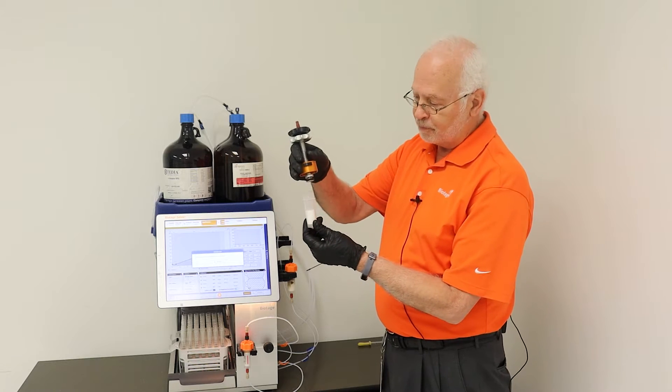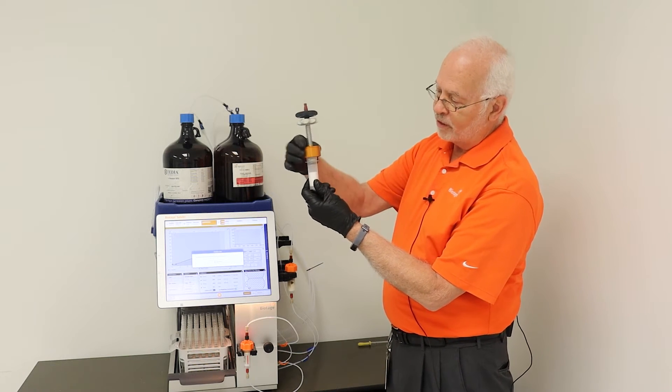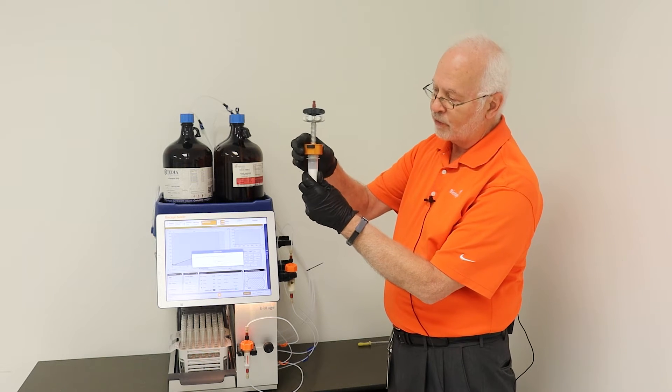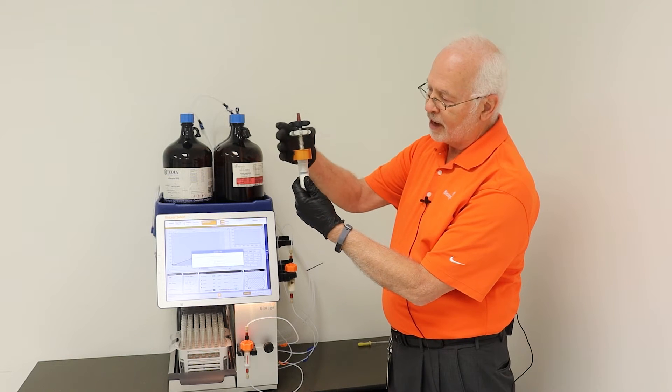You attach the plunger assembly by taking the gold part and attaching it to the top of the column, screwing that on, press this black button and it drops the piston down.